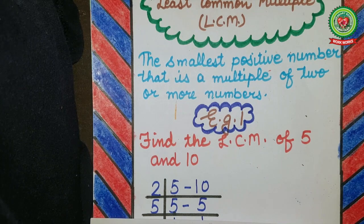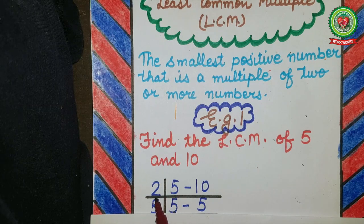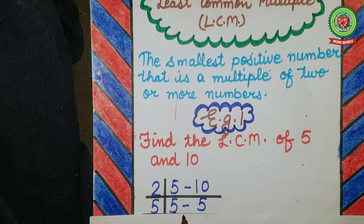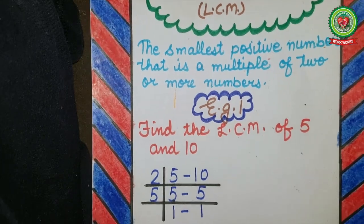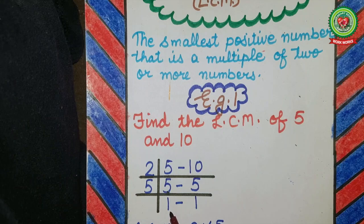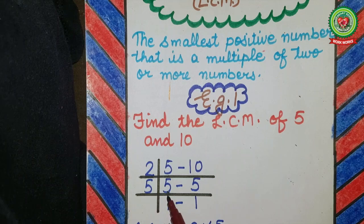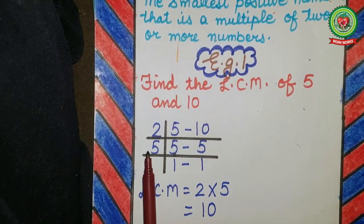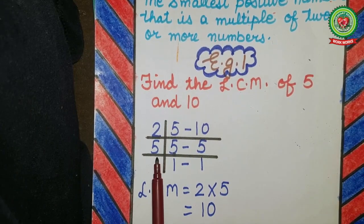5 is not divisible by 2, so bring 5 down as it is. Now 5 is a prime number, so divide 5 by 5. On the 5 times table, 5 comes on 1 — 5 ones are 5. So LCM is equal to 2 multiplied by 5.